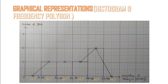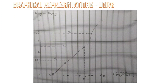For graphical representation, this is the histogram and frequency polygon. The yellow labels indicate the midpoint and the black labels indicate the lower boundary and upper boundary. This is the ogive graph, which has a first quarter, second quarter, and third quarter.